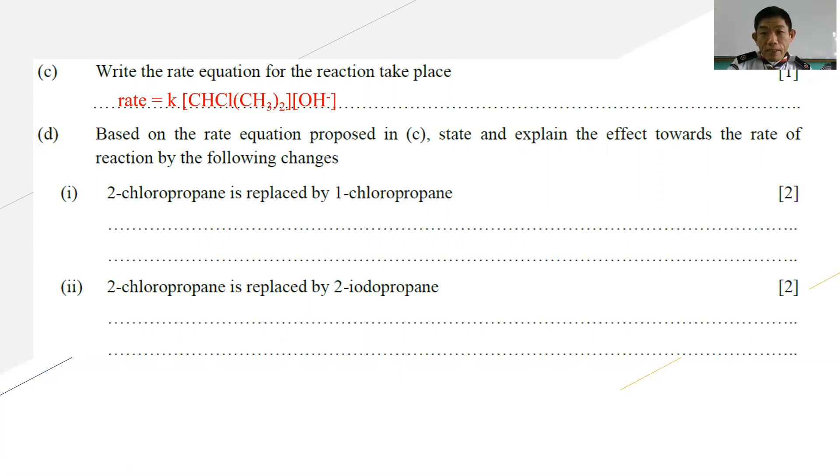Part C: Write the rate equation for the reaction that takes place. The rate equation can be written as rate equals K times [2-chloropropane] times [OH-]. Part D: Based on the rate equation in C, state and explain the effects on the reaction rate by the following changes. How do you compare when 2-chloropropane is replaced by 1-chloropropane? Since 2-chloropropane is a secondary haloalkane, while 1-chloropropane is a primary haloalkane, for primary haloalkane it is more favorable to undergo SN2 mechanism. Therefore you expect a faster reaction because 1-chloropropane is a primary haloalkane.